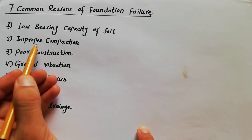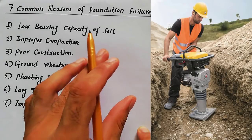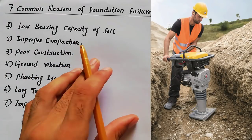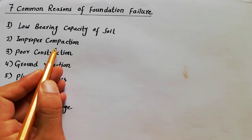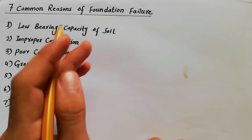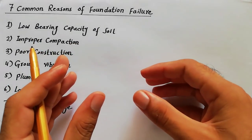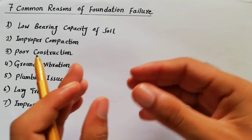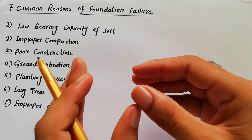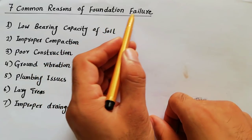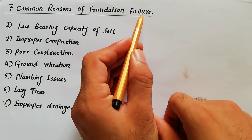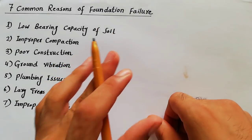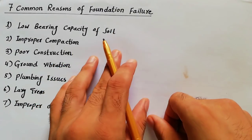The second reason is improper compaction. Remember that the site should be compacted, because if you don't compact the soil it will create more space between the soil particles, and that spacing can absorb water. That is the main reason of foundation failure — if the site is not compacted, it leads to a bad foundation and foundation failure.